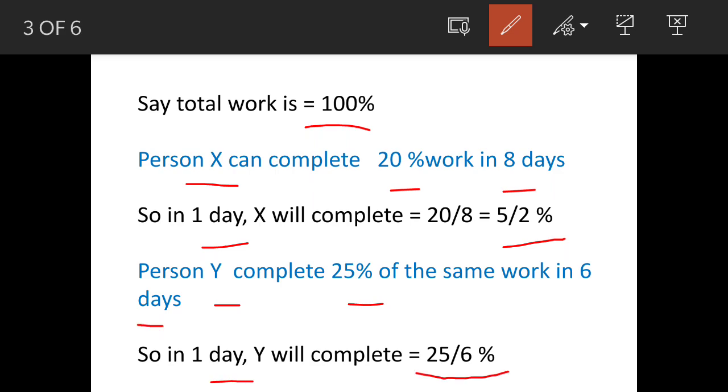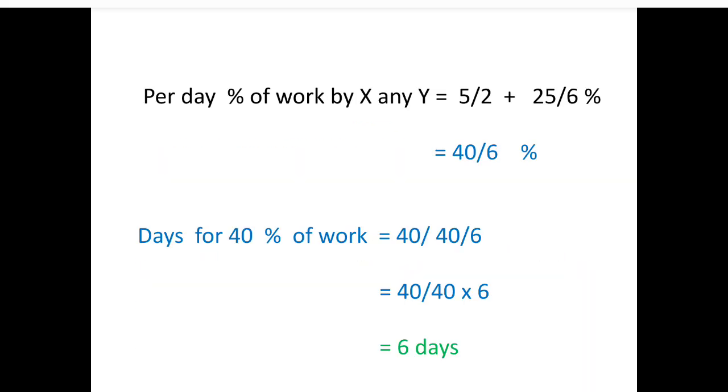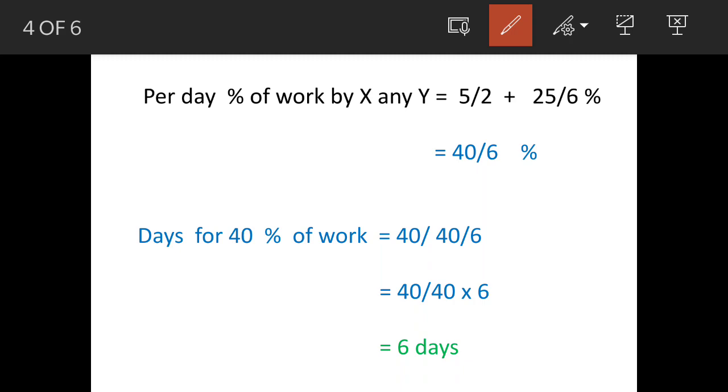Now for 40% work done by X and Y, we add both figures, that is 5/2 and 25/6. So we get 40/6% work will be done daily by X and Y.